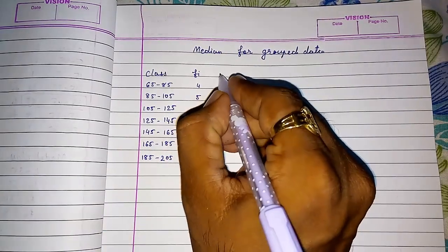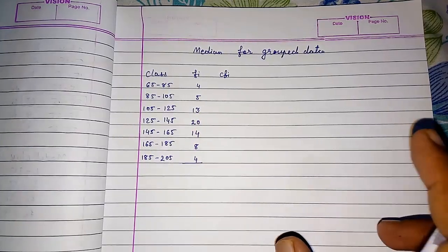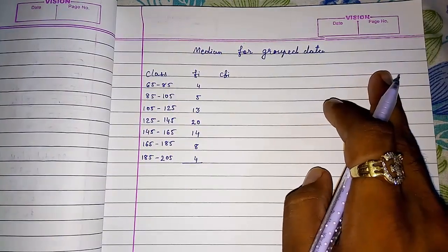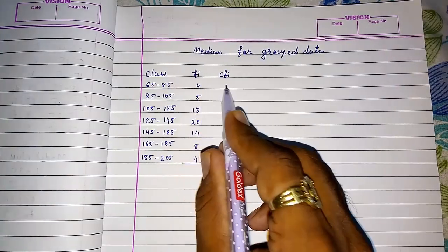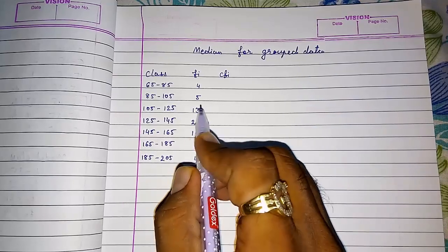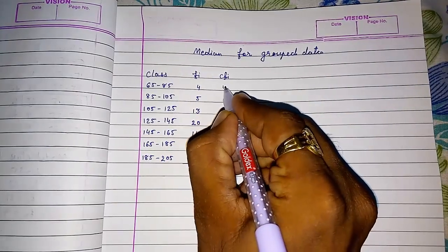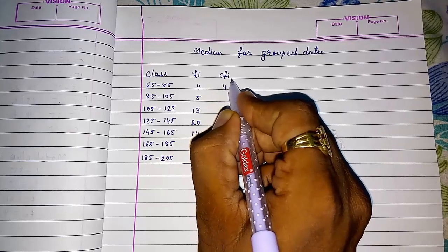First we have to find out cumulative frequency. This cumulative frequency is related to arranging them in ascending order. So first we are going to write 4. This is CF, cumulative frequency.